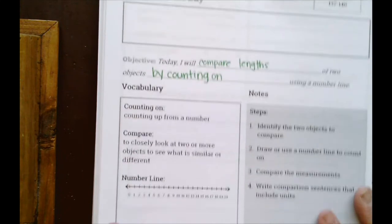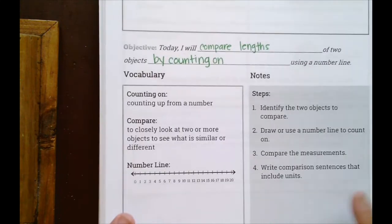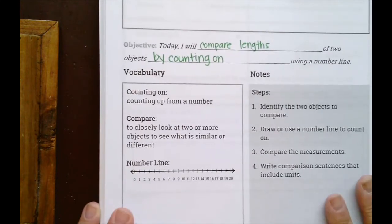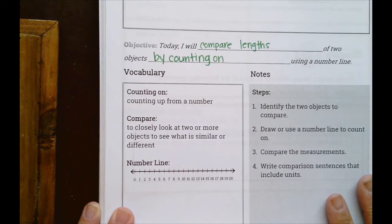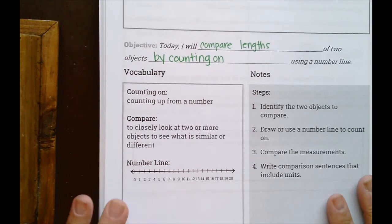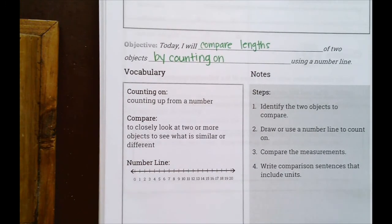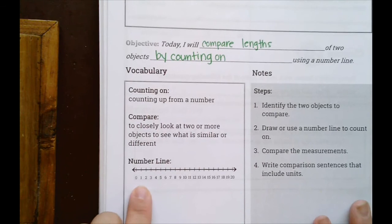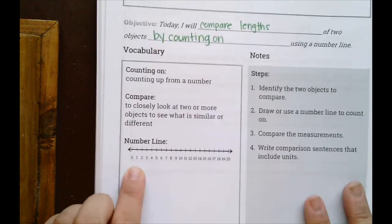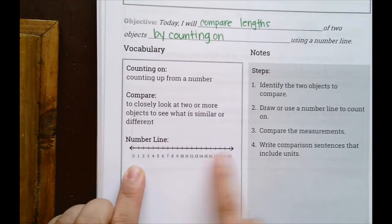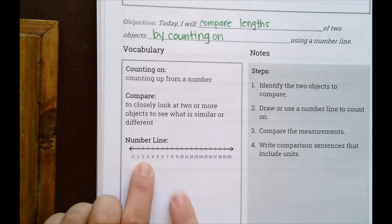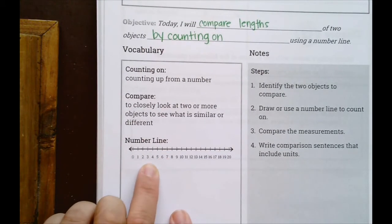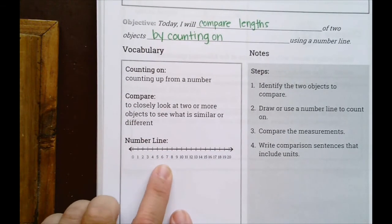The vocabulary words. Counting on means to count up from a number. So if you want to count on starting at the number one, you count on by moving forward: one, two, three, four, five, and so on and so forth.